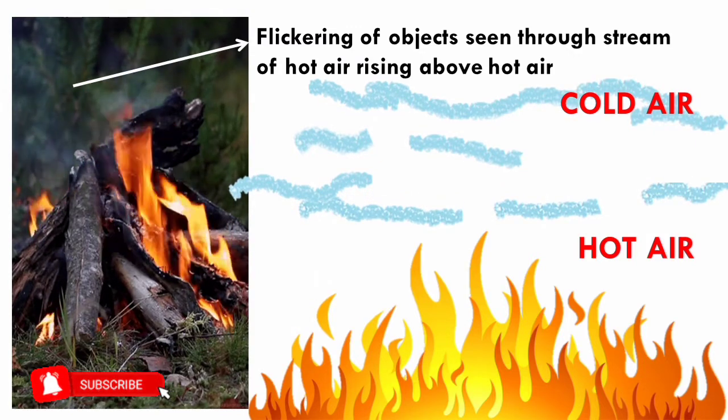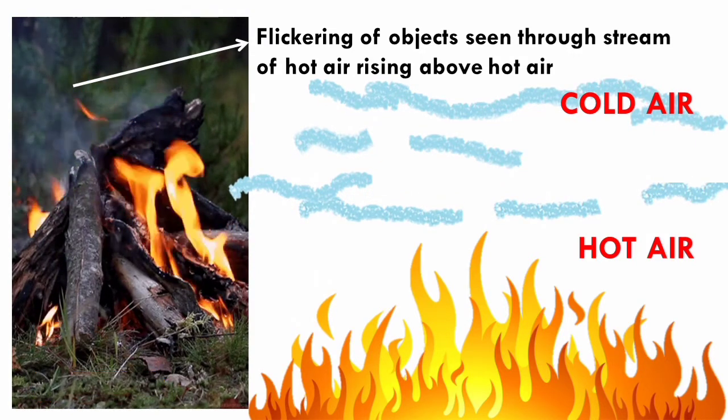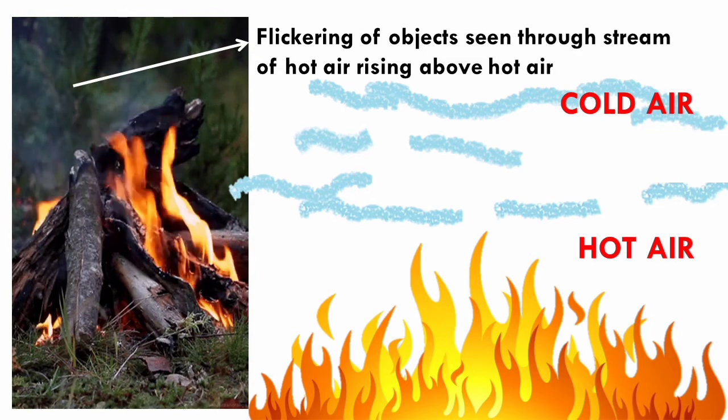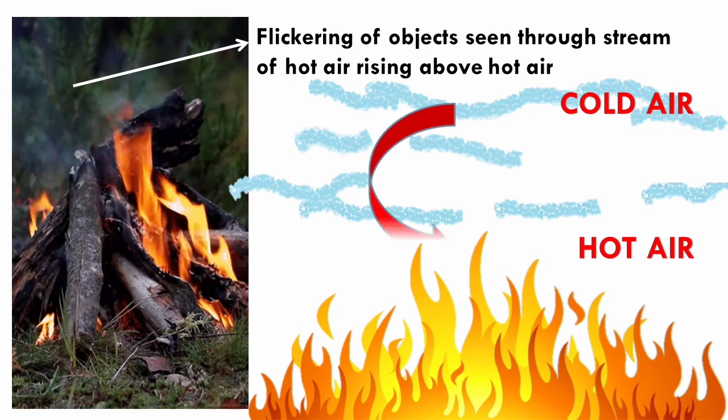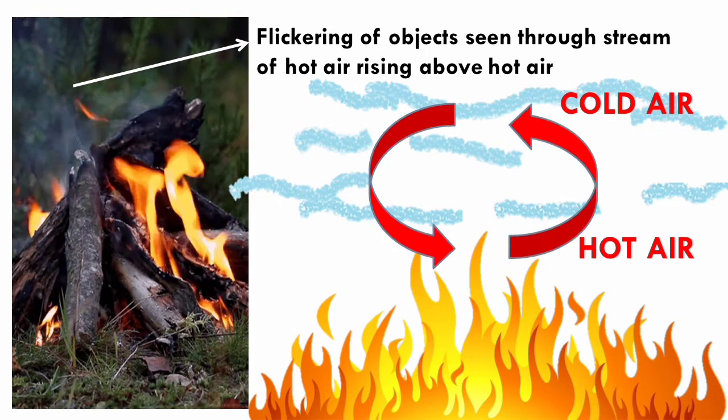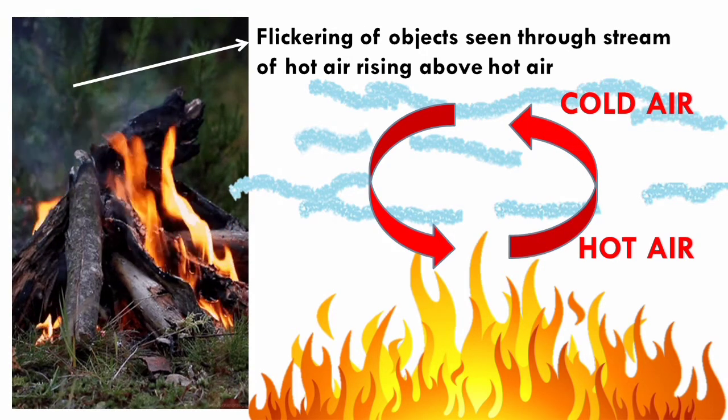Now, we should also understand that there is a circulation of this cold air and hot air throughout the layers of the atmosphere. So, the refractive indices are not always constant. This is an example of atmospheric refraction on a small scale.